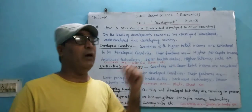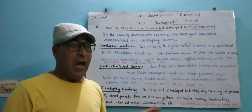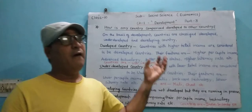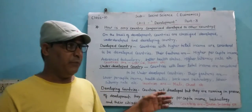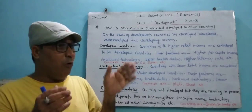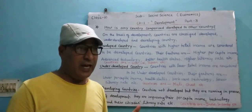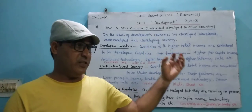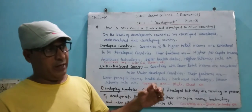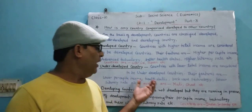Underdeveloped countries are those with lower total income, which is very low. Countries with lower total income are considered to be underdeveloped countries. Their features include lower per capita income and poor health status.